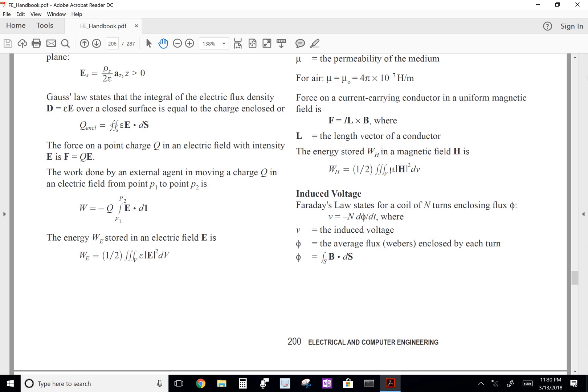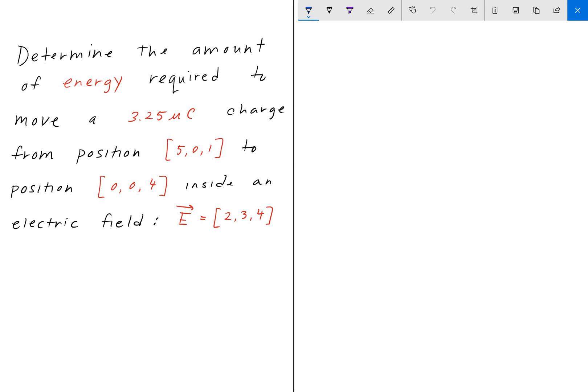So, we're going to write that same equation on the next page. So, writing that integral, we have work done is equal to negative Q integral E dot DL, where it's going to go from point P1 to point P2.